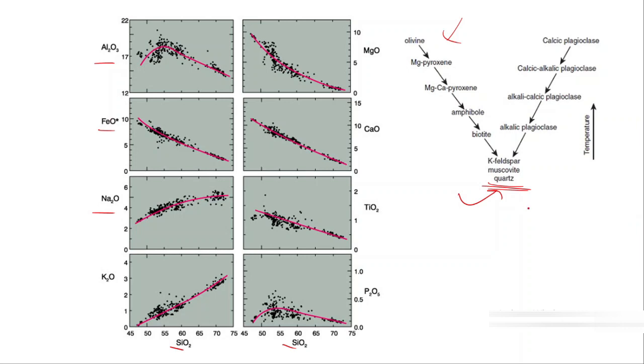Without wasting any time, let's get started. We're going to analyze all these major elements. First, we'll start with FeO and MgO. You see all the points are data points which he took and plotted against SiO2.